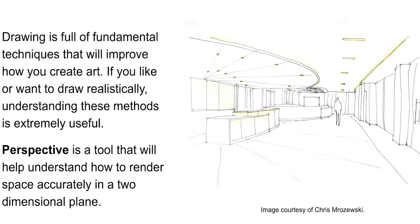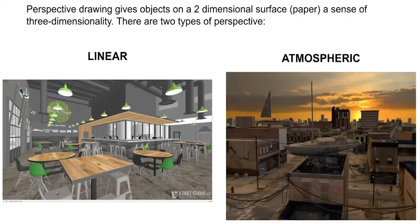The technique we're going to talk about is perspective. Drawing is full of fundamental techniques that will improve how you create art. If you want to draw realistically, understanding these methods is extremely useful. Perspective is a tool that helps us understand how to render space accurately on a two-dimensional plane — on a plain sheet of paper, we can imagine a landscape or cityscape and render it accurately using lines. There are two types of perspective: linear perspective and atmospheric perspective. In Tim Portlock's work, he actually uses a combination of the two.